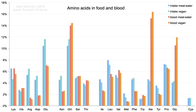A rare exception to the dominance of alpha-amino acids in biology is the beta-amino acid beta-alanine, which is used in plants and microorganisms in the synthesis of pantothenic acid, a component of coenzyme A.